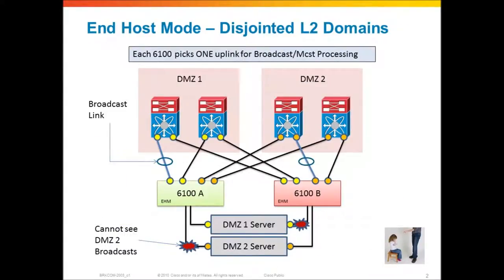Let's talk about end-host mode and connecting end-host mode to upstream disjointed layer 2 domains. These would be two different layer 2 networks — for example, two different DMZs that you've decided to connect UCS to, in a single UCS pod in end-host mode. Some folks have attempted to do this and run into a problem, and we'll discuss that here briefly.